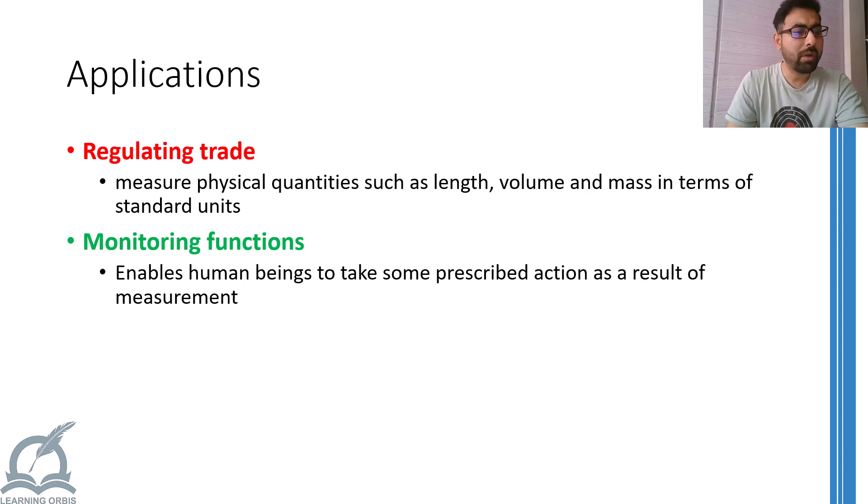For example, when you go to the market to purchase something by weight that is trading between humans and when a human worker loads some raw material into a machine so that machine can process it that is trading between a human and a machine. While when a machine transfers its product or material to another part of the machine, that is a trading between two machines.